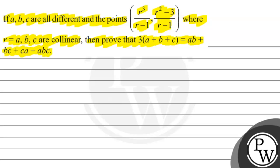This is a 7-mark question. Given that the point is (r³/(r-1), (r²-3)/(r-1)) where r can be a, b, or c, and the points are collinear. We have to prove that a+b+c equals ab+bc+ca minus abc.